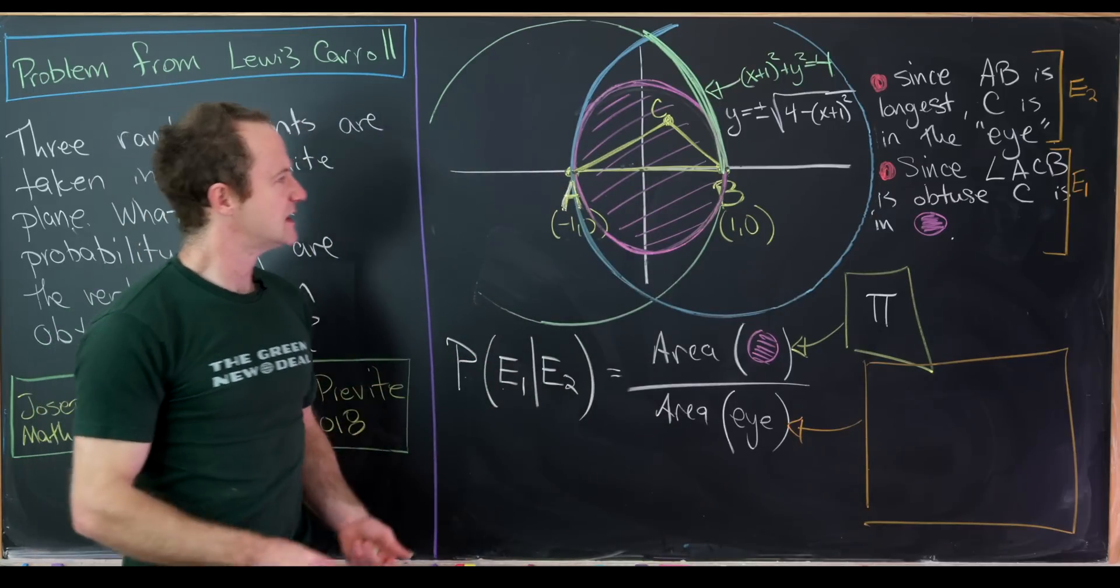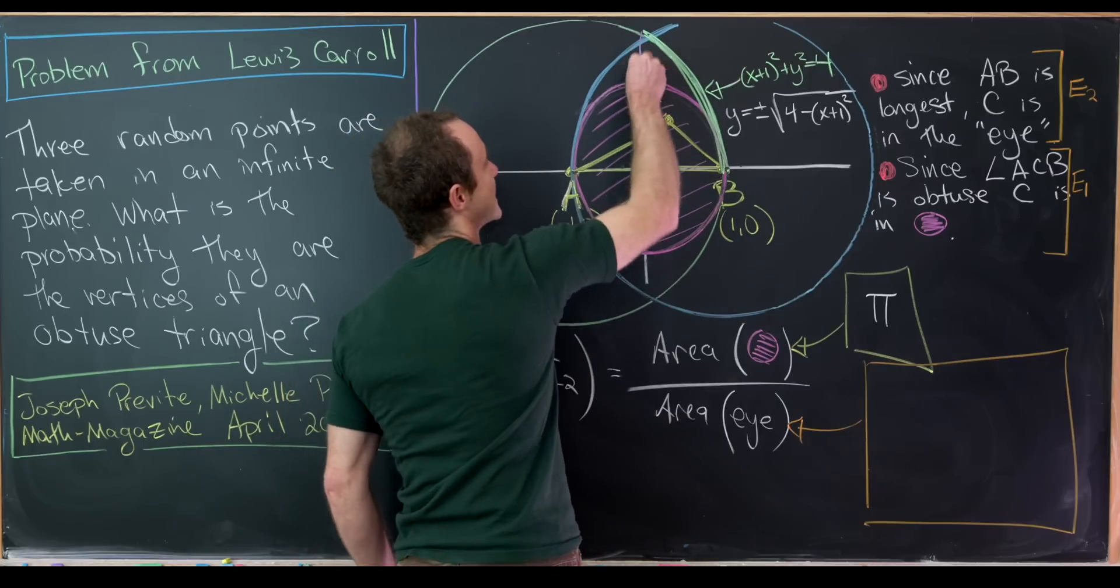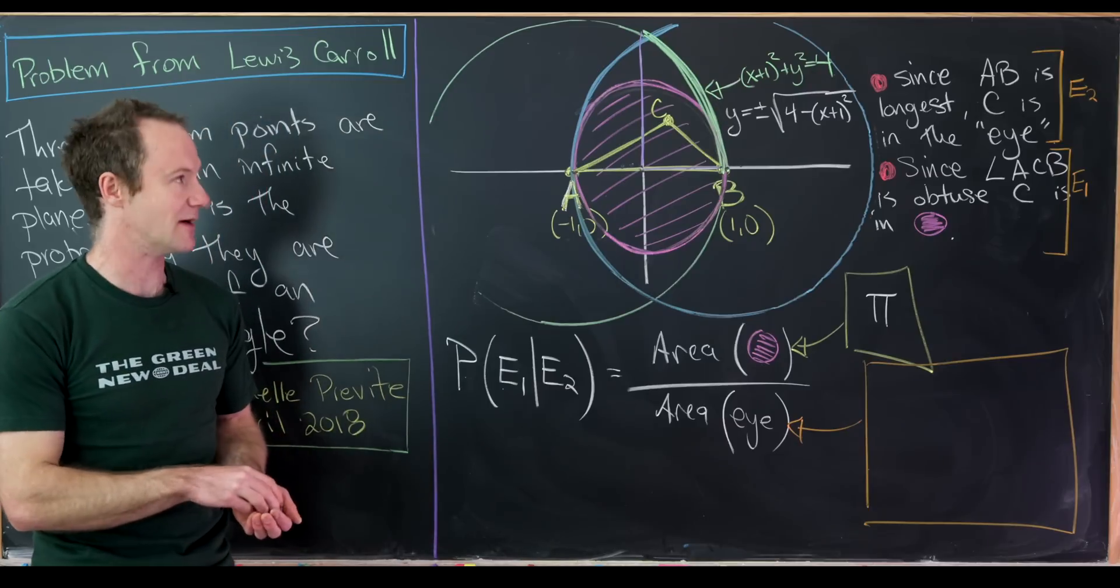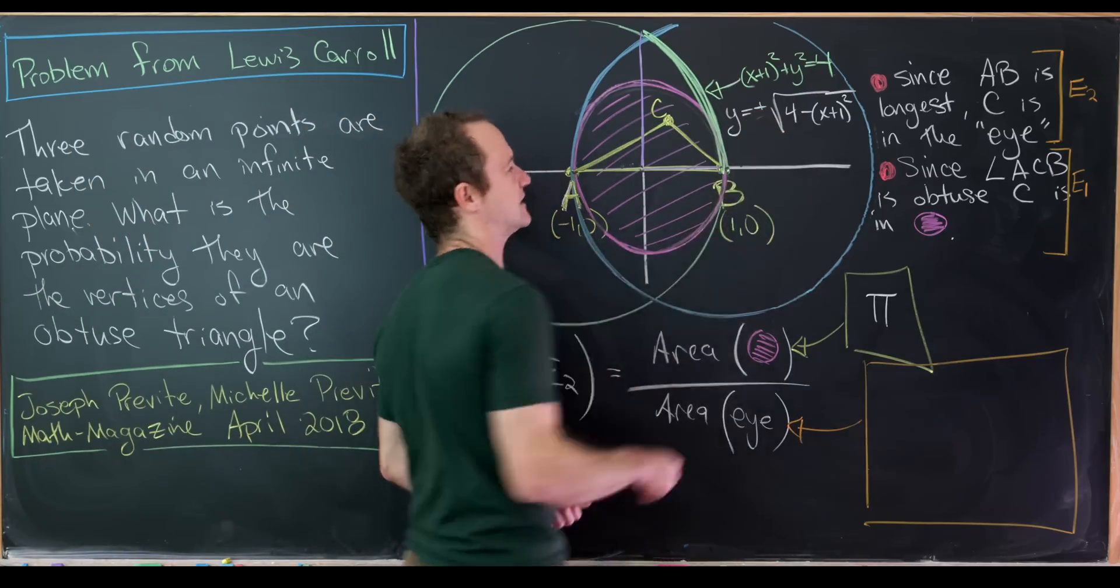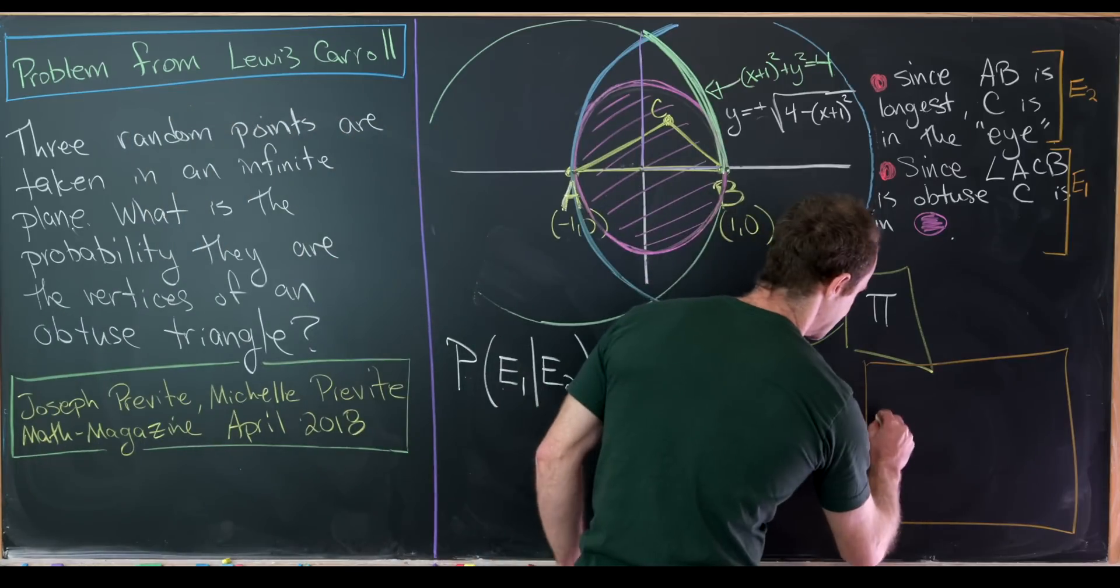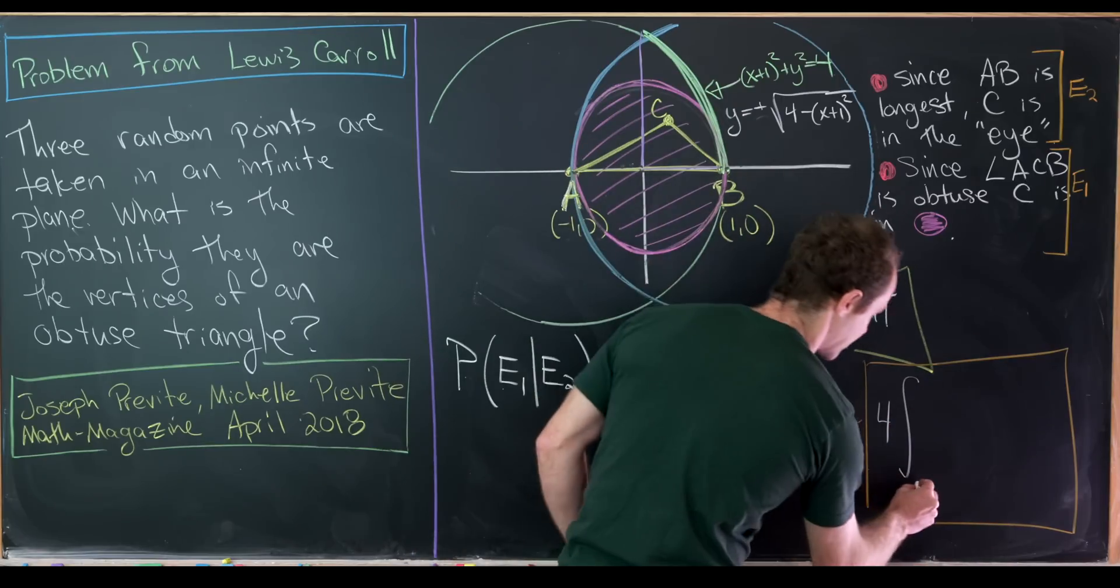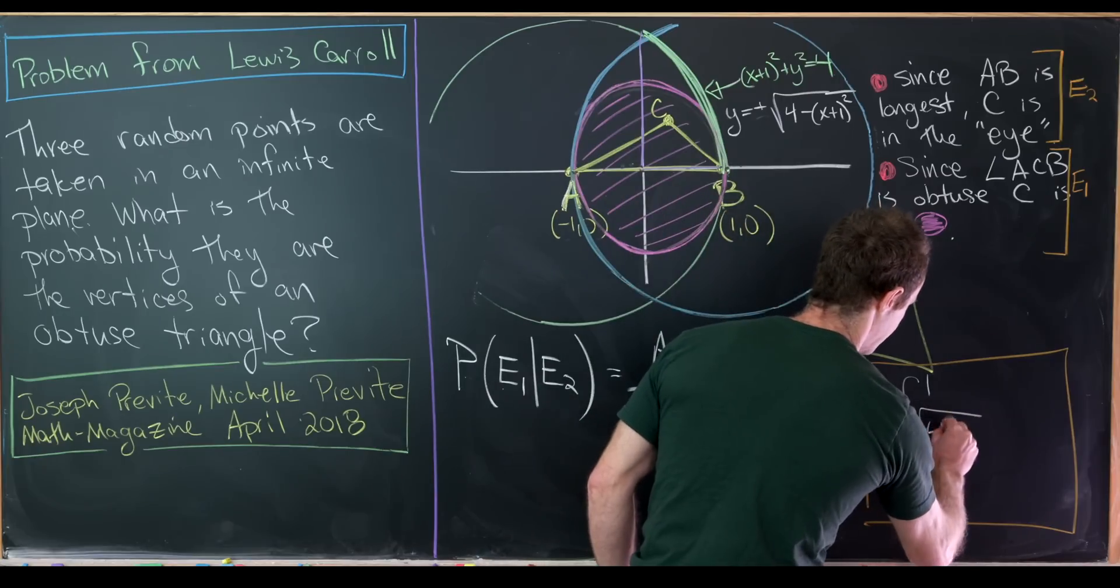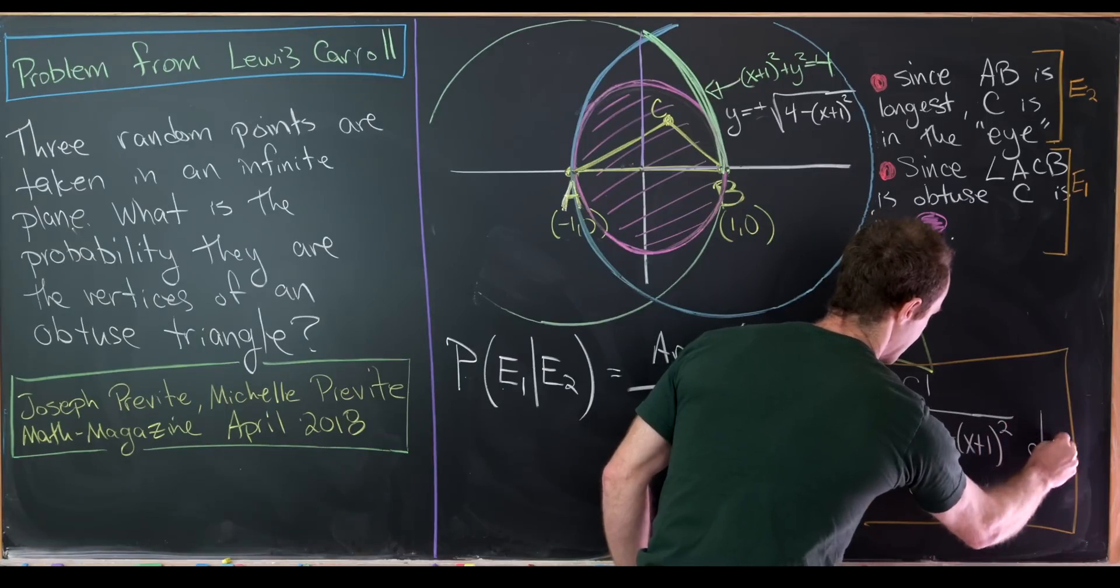But then, since we can use symmetry here, all we need to do is calculate what's going on in the first quadrant and then multiply by 4. So in that case, I'll just take the positive portion of the square root. So that means the area that we're interested in here is, in fact, 4 times the integral from 0 to 1 of the square root of 4 minus (x + 1)² dx.